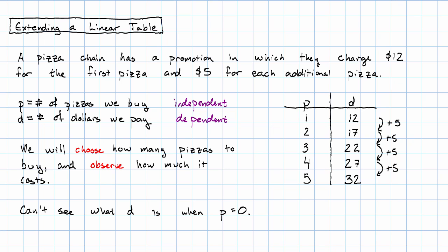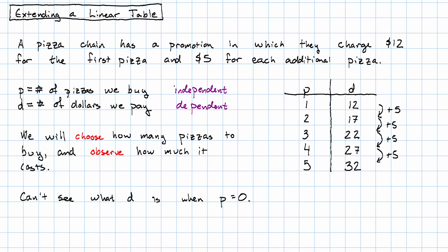And the reason we can't see that is, how much does the pizza place charge you if you don't buy any pizzas? Well nothing, you're not buying anything from them. So that value, p equals zero, it doesn't really make sense in this story. But it's mathematically useful.